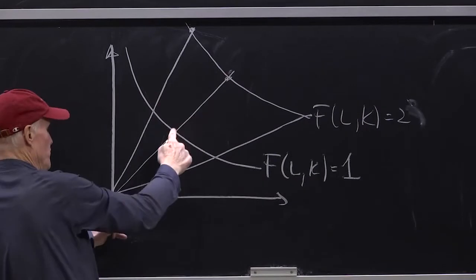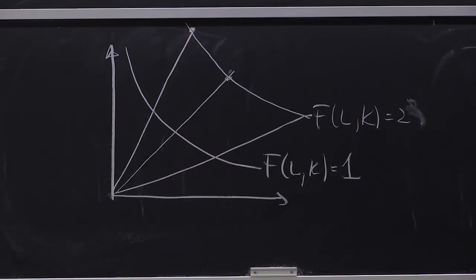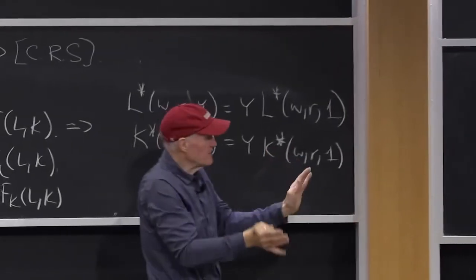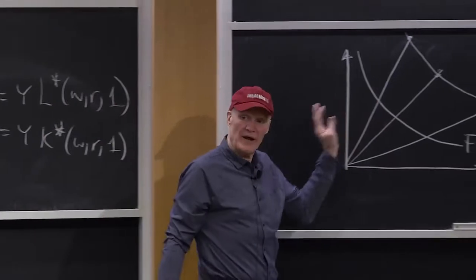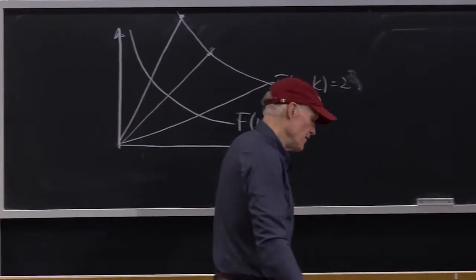This would be F of L and K equals two. If I've just doubled the distance at each point. I'm not sure I drew that exactly right. But if I doubled each of those distances, I would get the two unit isoquant. All the isoquants are just radial blow-ups of one another. Effectively, once I know the unit isoquant, I know all the isoquants once I have constant returns to scale.